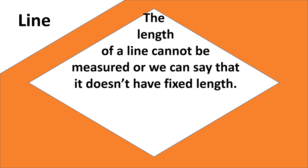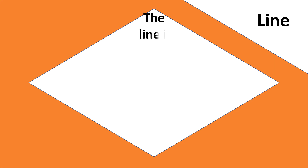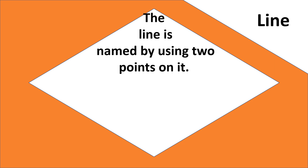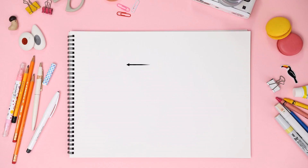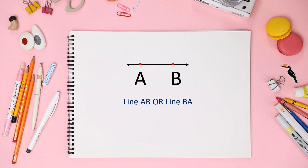A line is named by using two points on it. Here I have drawn a line with two points, point A and point B, so we can say 'line AB' or 'line BA' — both are the same thing.